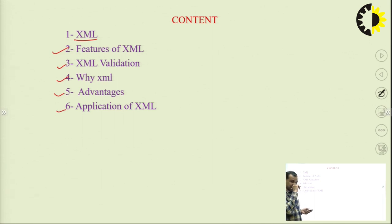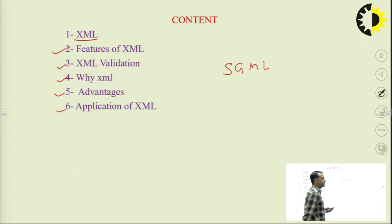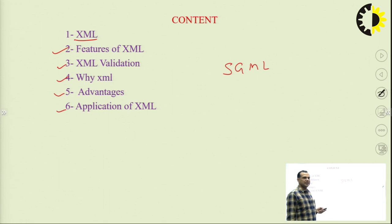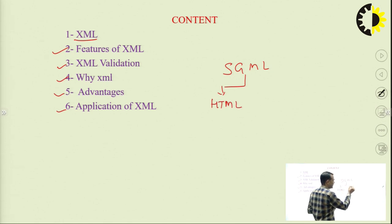When we talk about XML, we start with SGML — Standard Generalized Markup Language. SGML can be divided into two parts: one is HTML and the second one is XML.